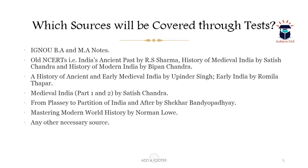As a history optional student you might know the standard sources. These include IGNOU and BA/MA notes, old NCERTs, and for ancient India the book by Upinder Singh titled 'A History of Ancient and Early Medieval India.' Other sources include 'Early India' by Romila Thapar, 'Medieval India' Part 1 and Part 2 by Satish Chandra, 'From Plassey to Partition' by Shekhar Bandyopadhyay, and 'Mastering Modern World History' by Norman Lowe, along with any other necessary sources.